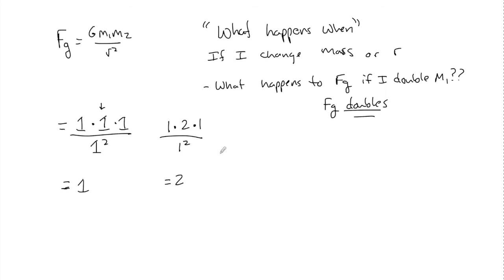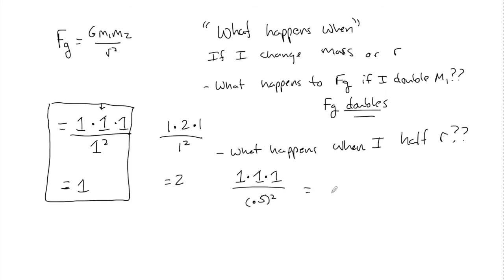What happens when I half R? I do the same thing so I get my initial condition. So I already set my initial condition. You'd have to do it each time. But now what I'm going to do is I'm going to change what they want me to change. So the top will remain the same. One times one times one. That's G, M1, M2. Now what I do is I'm going to take a half of that and I'm going to square it and I'm going to see when I half the distance this comes out to four. So one over four, F_g is going to now quadruple.